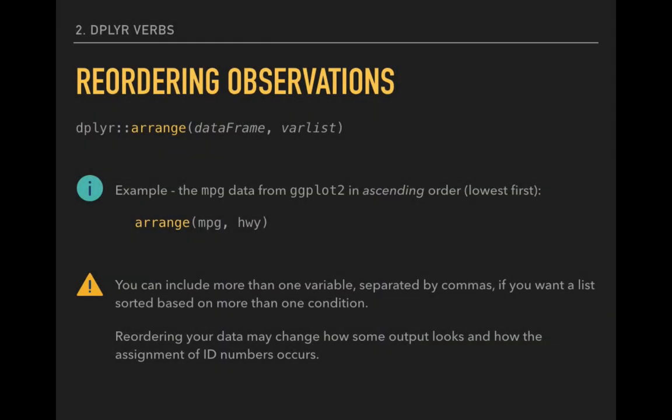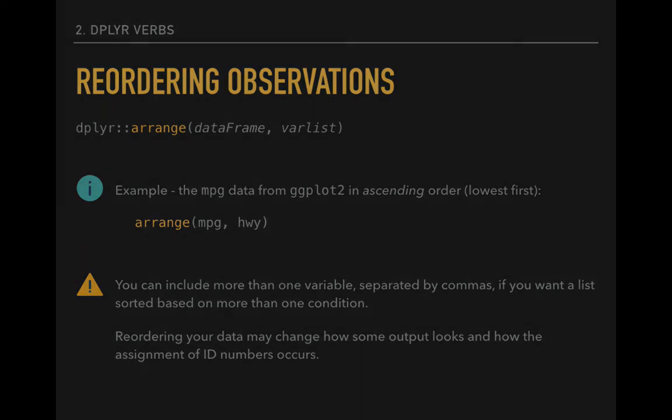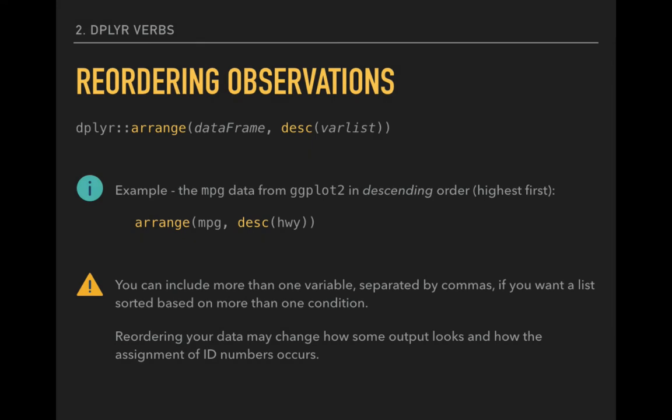We accomplish this effect with the verb arrange. We can specify one or more variables to sort our data on. In this example, we'll sort cars from low to high based on their highway fuel efficiency. If we wanted to sort them from high to low, we could wrap the variable for highway fuel efficiency in the descending function, DESC. The flexibility to specify a list of variables instead of just one means that we can sort our data based on one characteristic, like type of car, and then specify the sort order within each car type as well, by a second or even third factor.